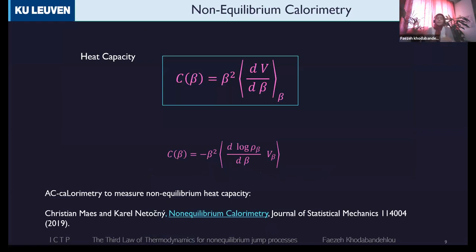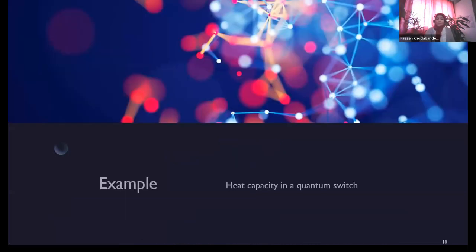And the other one is definition of the heat capacity in terms of quasi-potential. This beta is inverse of temperature. The derivative of temperature for the quasi-potential gives you the heat capacity. And because the mean value of the V quasi-potential is zero, you can write it like that. I will not describe everything. You can see the details in non-equilibrium calorimetry paper with Christian Mauss and Karel.